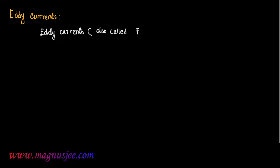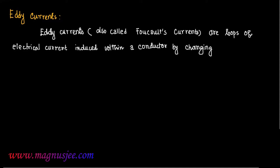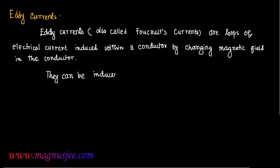Eddy currents, also called Foucault's currents, are the loops of electrical current induced within a conductor by a changing magnetic field in the conductor.